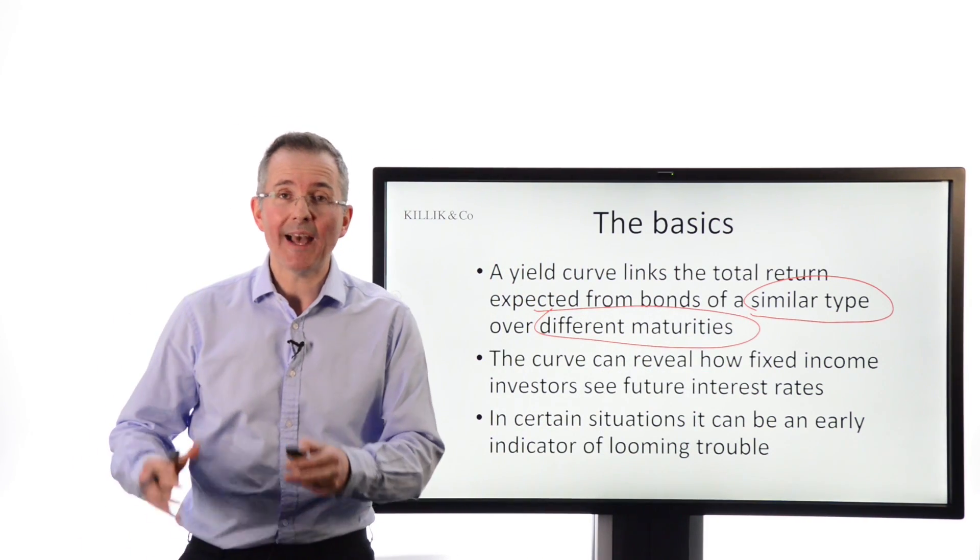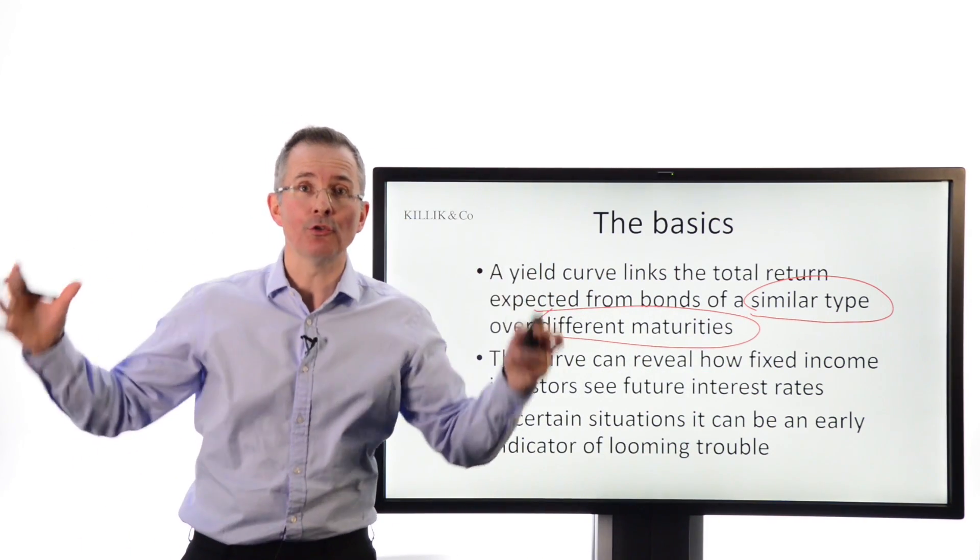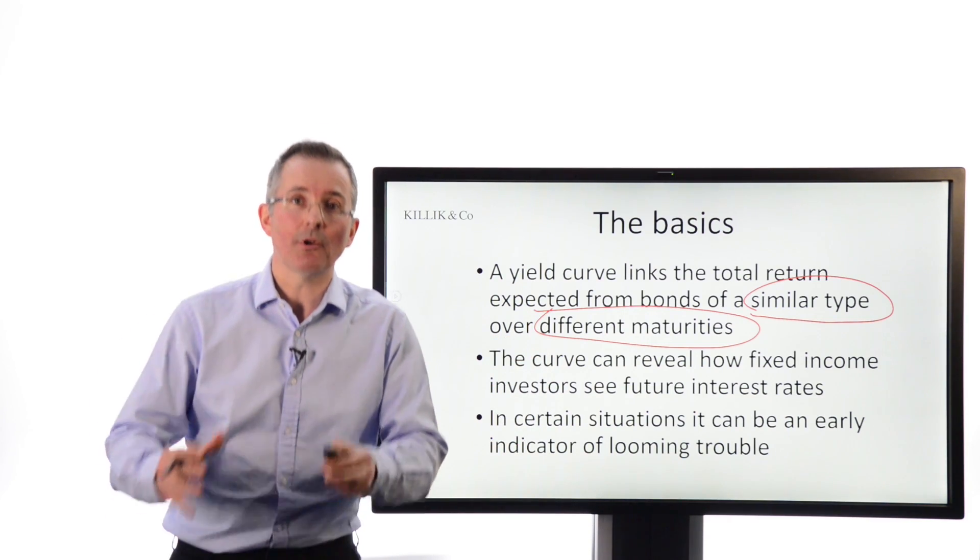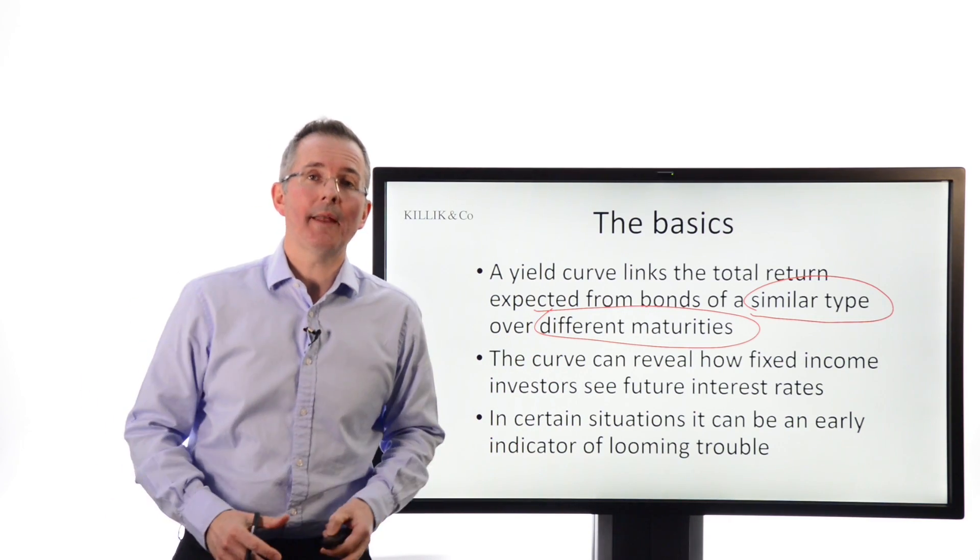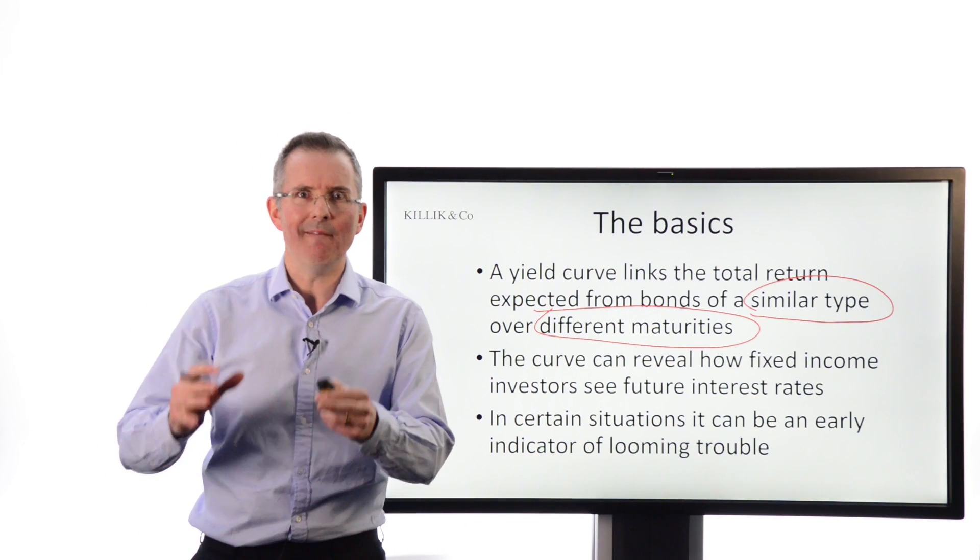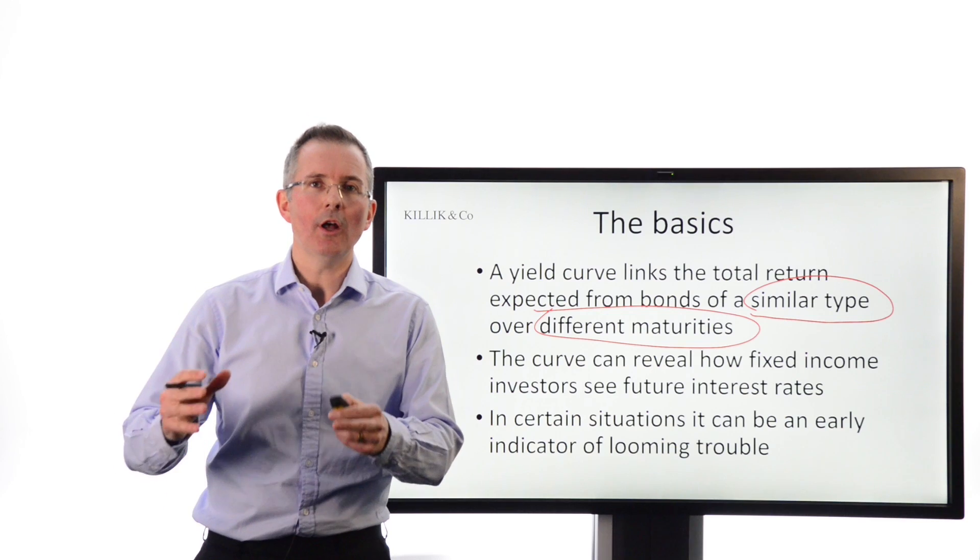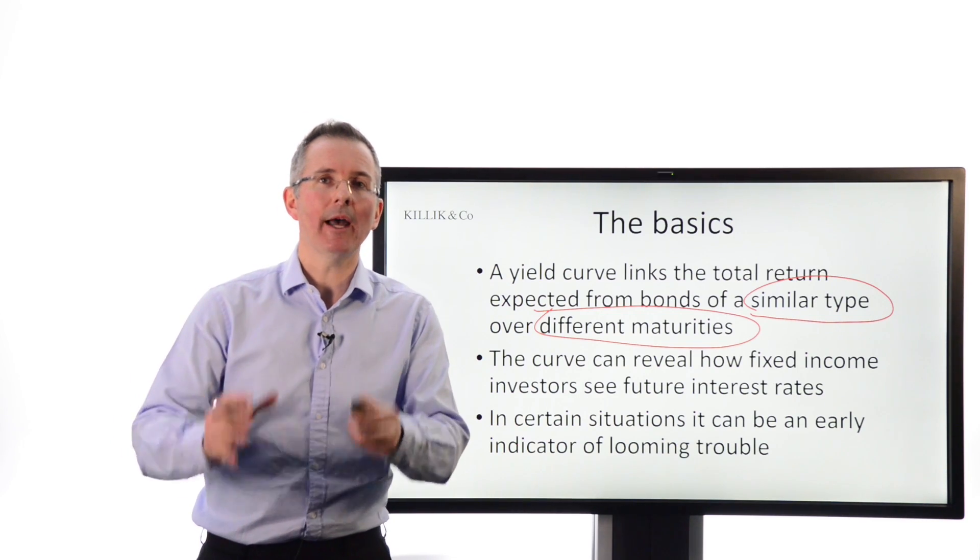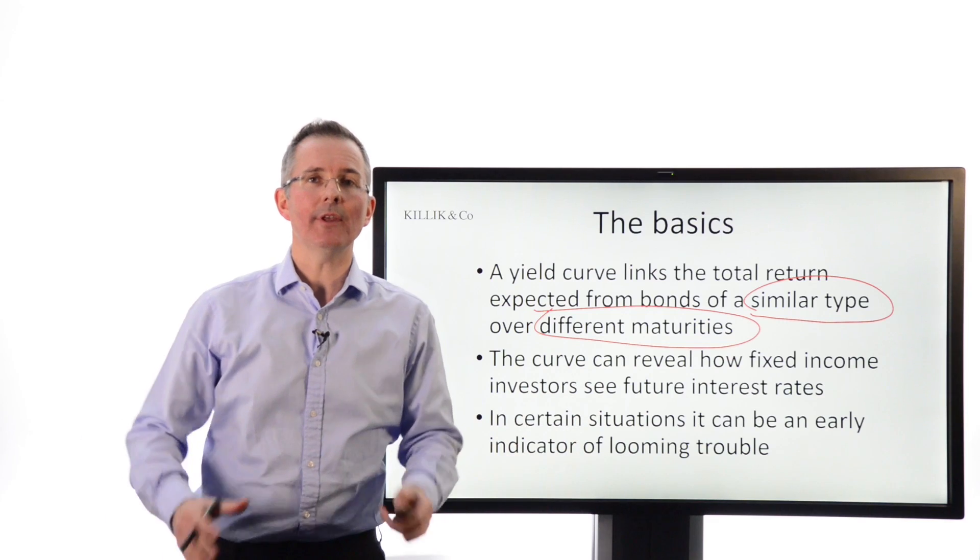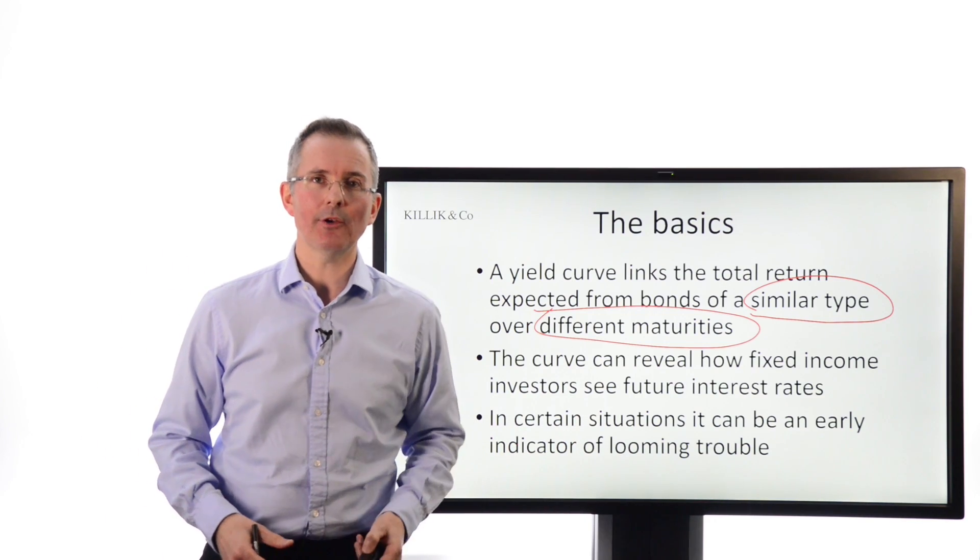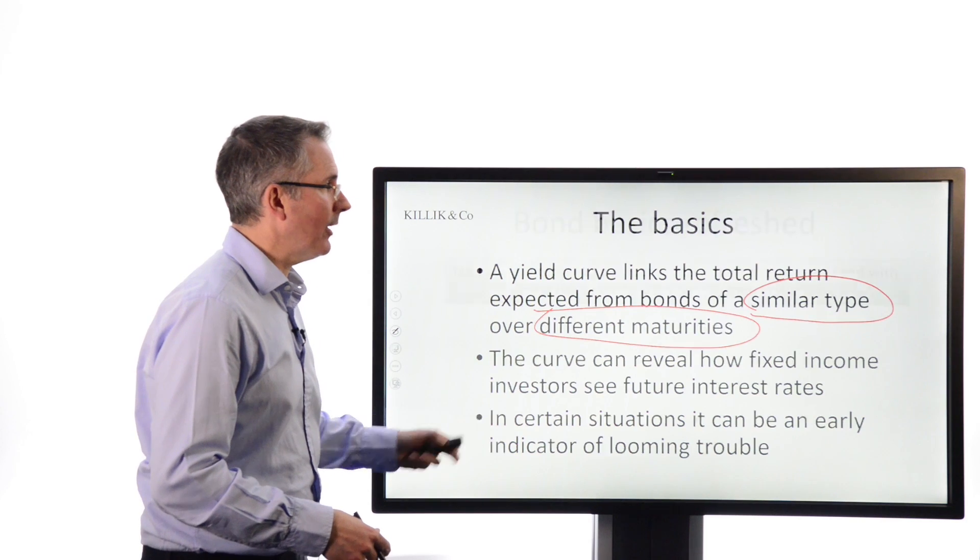And the curve can reveal how fixed income investors as a group basically see future interest rates. They expect them to rise, they expect them to fall, and they can also reveal one or two other things as well. And in certain situations, the yield curve, when it inverts, is quite a useful early warning indicator of potential trouble ahead, as seen by the so-called bond vigilantes, the bond market investors out there trading fixed income securities on a daily basis.